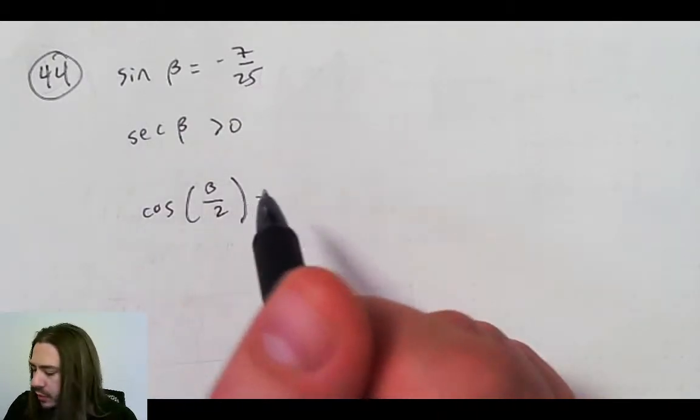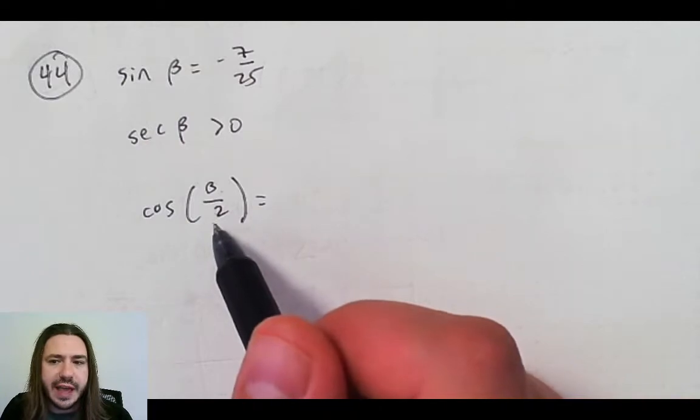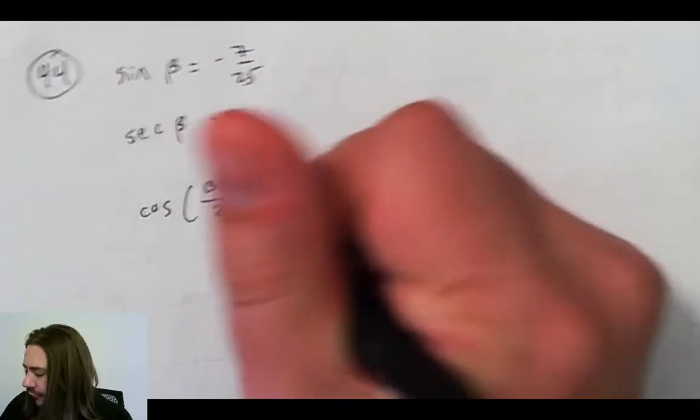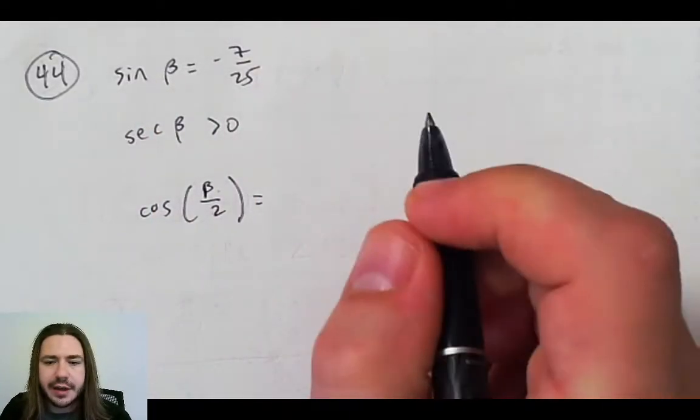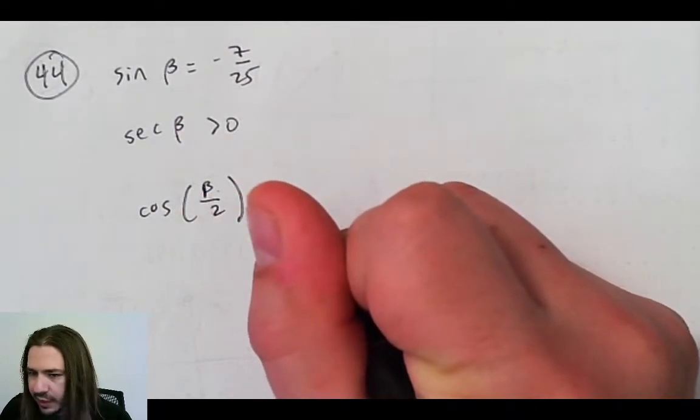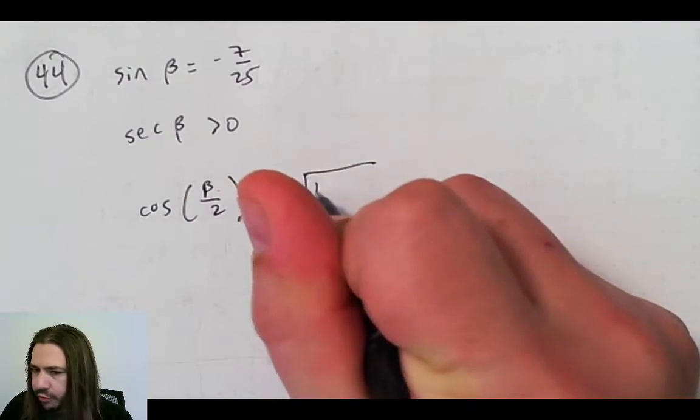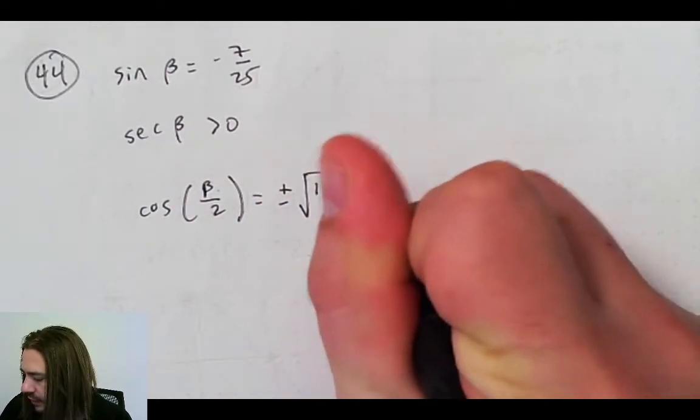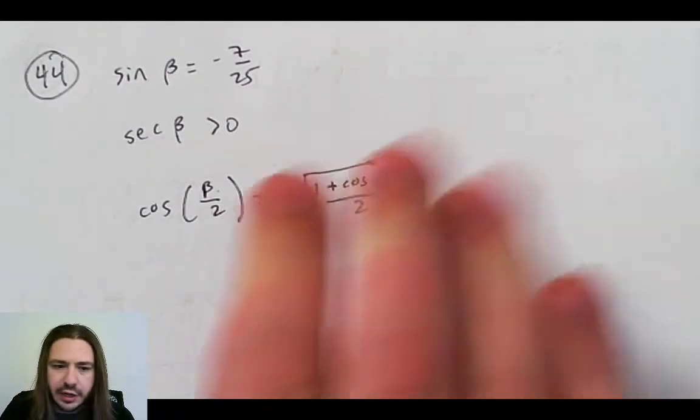So what we're going to use is the half angle formula for cosine, or the half angle identity, which is either plus or minus, and we'll determine what that is momentarily, the square root of 1 plus cosine beta over 2. So this is another one of those formulas,